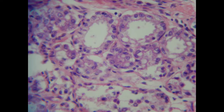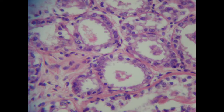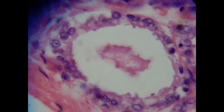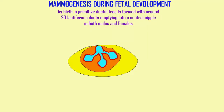By 32 weeks, programmed cell death by the epithelial cells in the internal regions of these cords causes those cells to be lost, creating hollow tubes which exist by embryonic week 32.